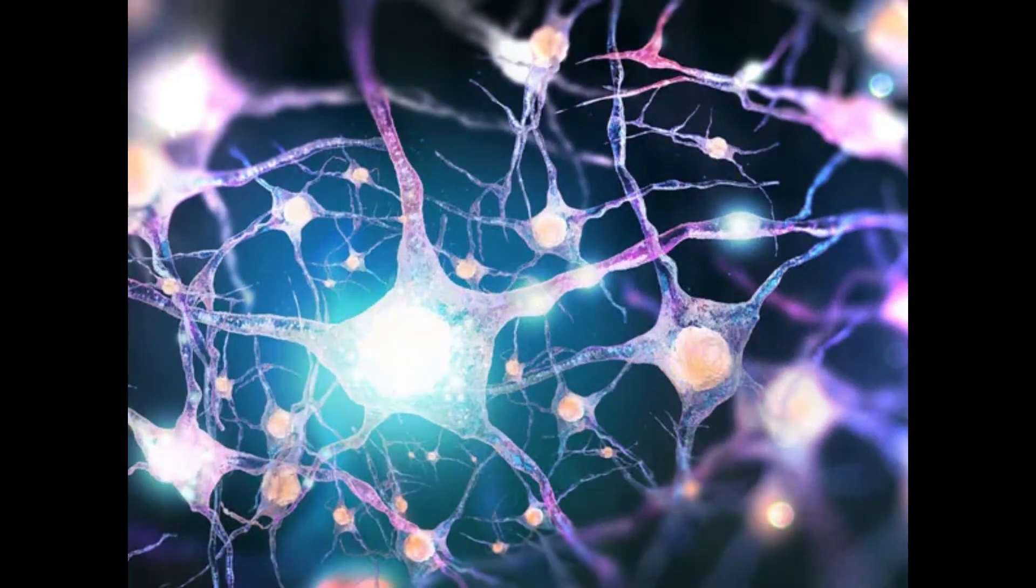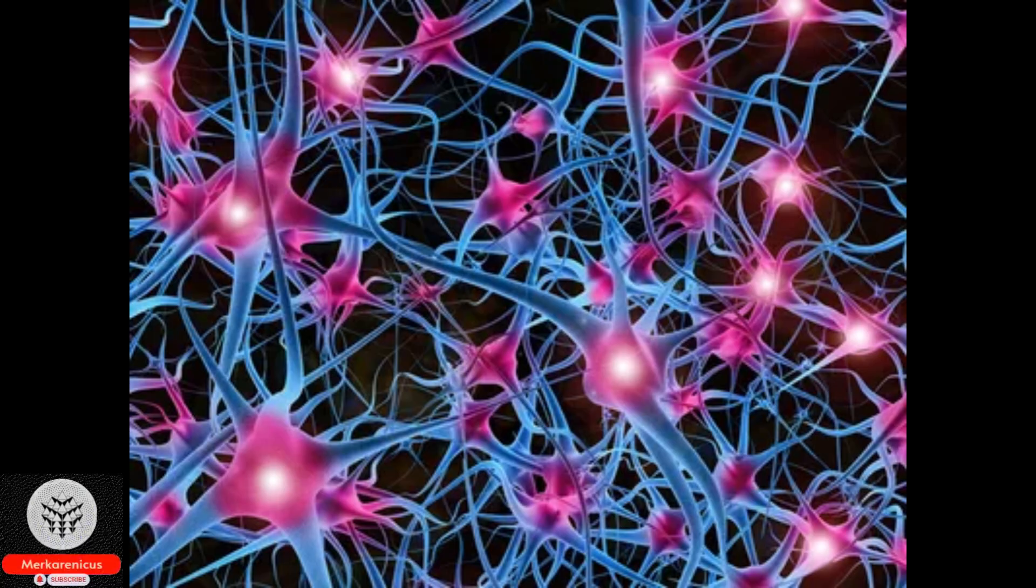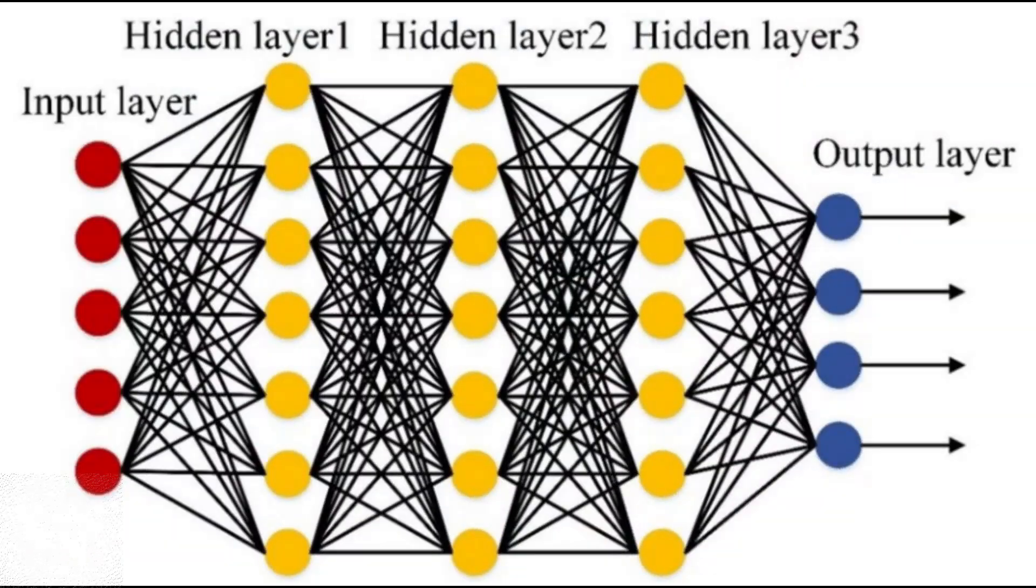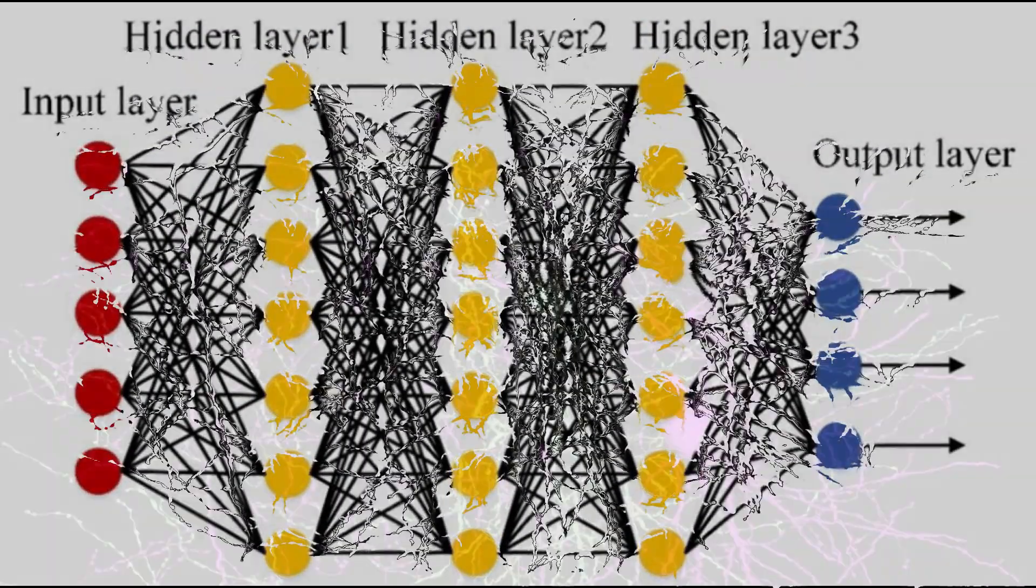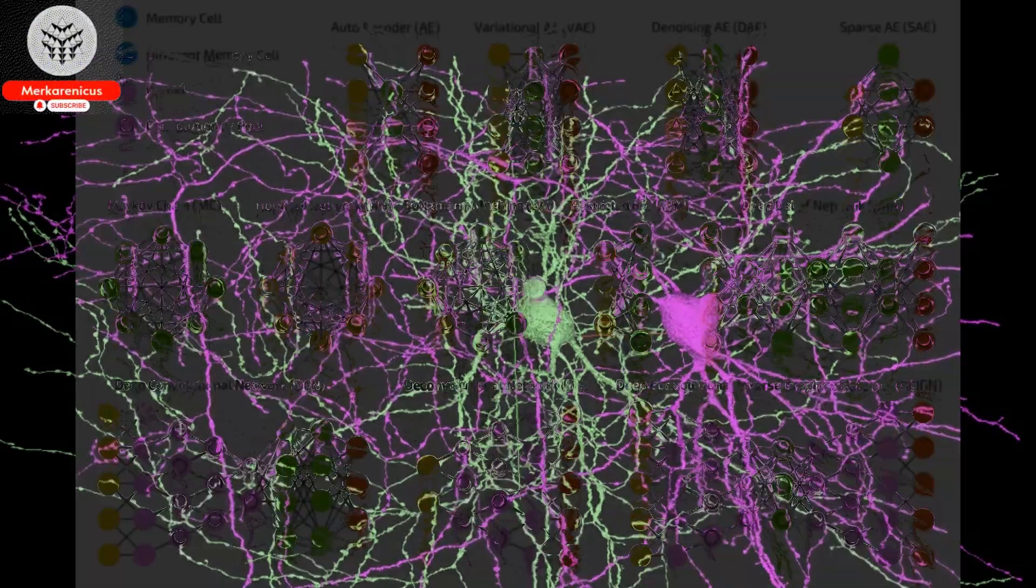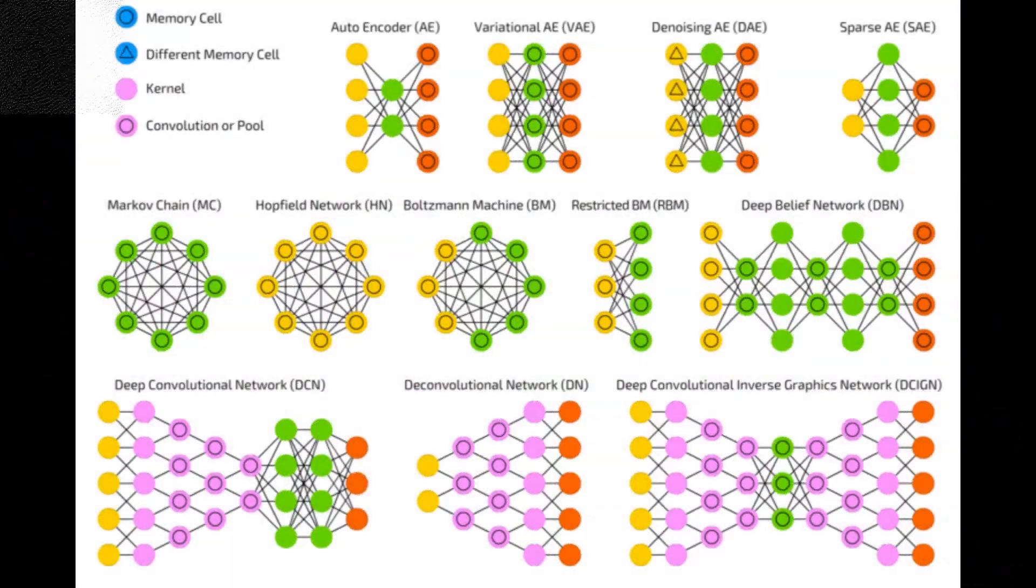Enter the patch clamp electrode, a virtuoso tool for probing individual neurons with surgical precision, yet its brilliance dims when scaled, like a soloist drowning in an orchestra's cacophony. For decades, scientists wrestled with this paradox: sensitivity versus scale.